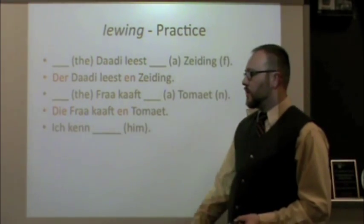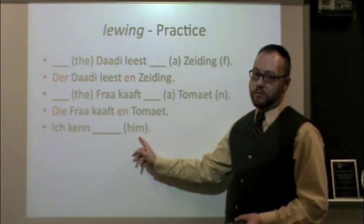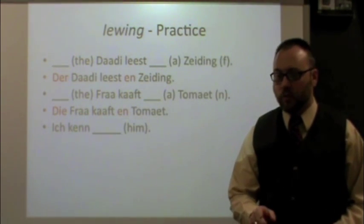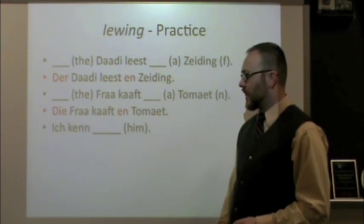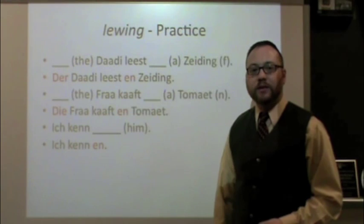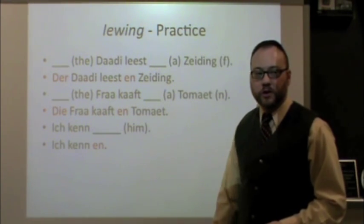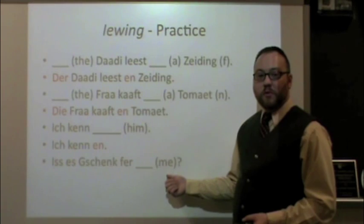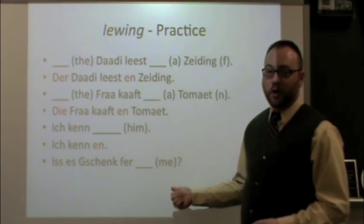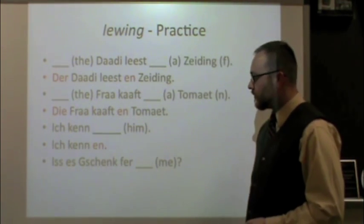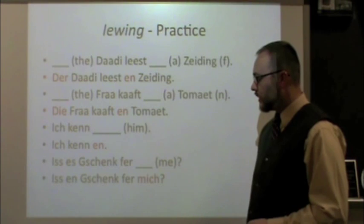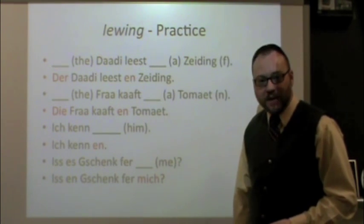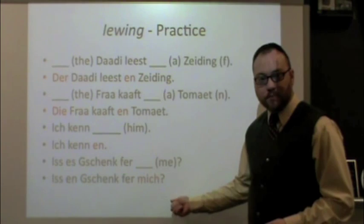How about another one? Give the correct form of 'him' on the line: 'Ich ken ___.' Look at your accusative pronouns. The correct answer is 'Ich ken en' — I know him. And one more: give the correct form of 'me.' The answer is 'Is en Geschenk fur mich' — is a present for me.